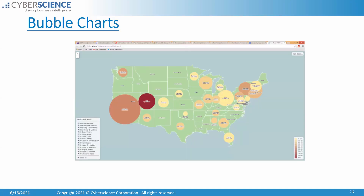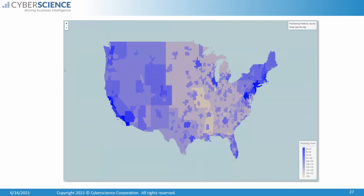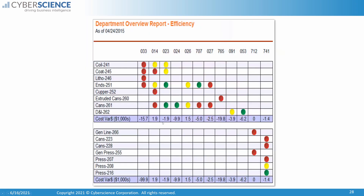You can also use bubble charts imposed upon a map of the country. You can also set up a heat map broken down by county showing sales by county. And here's an example of a scorecard with red, yellow, green, and purple lights.